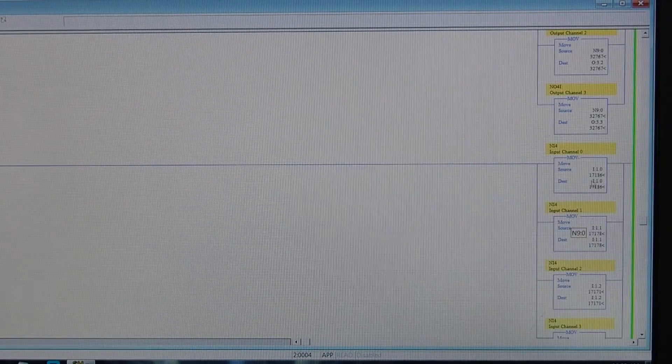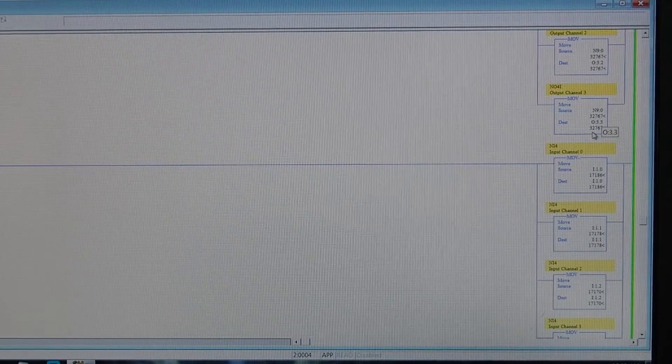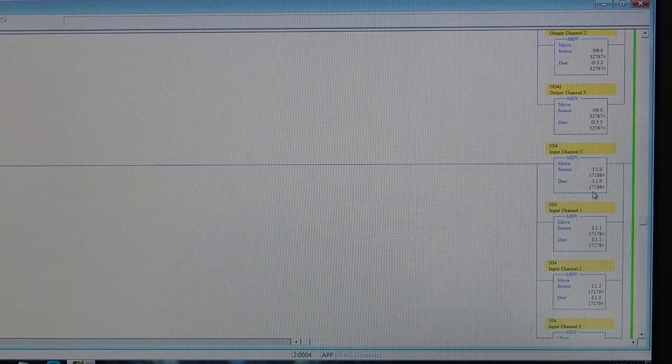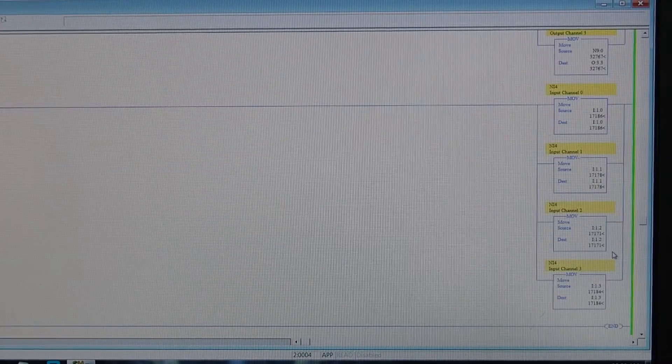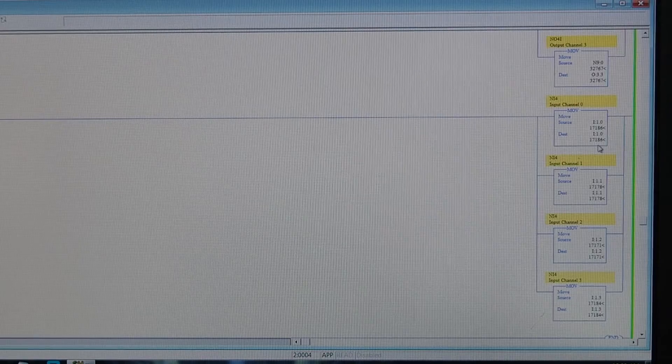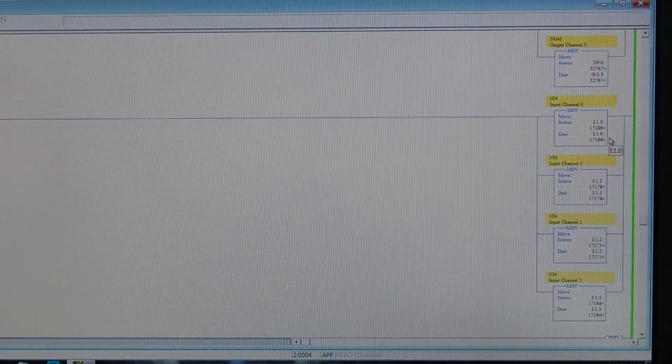And if we go down here to the bottom, so there's our output to each channel, 32,767. On the input, on the NI4, it shows a 17,186, 178, 171, 184. So all of those counts are well within range of accuracy.